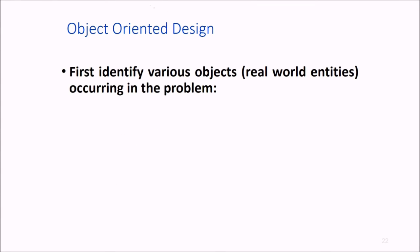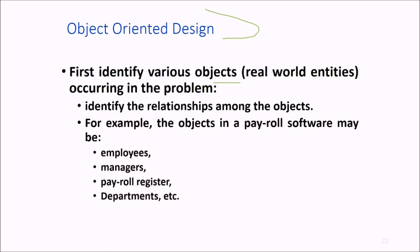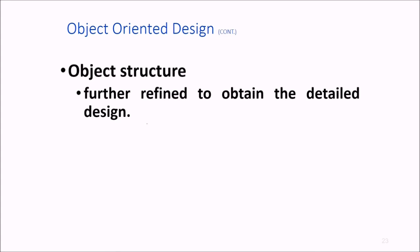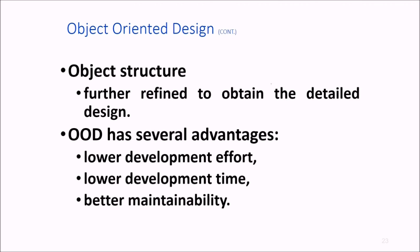In object-oriented design, we first try to identify various objects, that is real-world entities which are presenting the problem. Then, once the objects are found, the relationship among the objects is to be ascertained. For instance, a payroll software may have objects as employees, managers, payroll register, or departments. Object structure is again further refined to obtain the detailed design. Object-oriented design has various advantages: lower development effort, lower development time, and easy to maintain, so better maintainability.